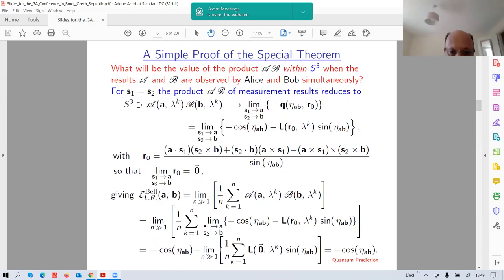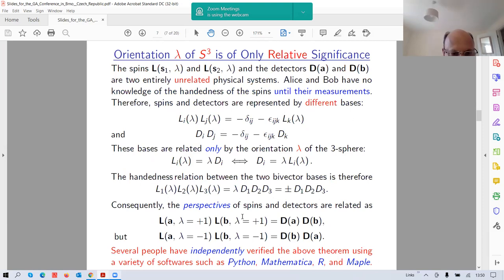These spin bivectors are related to detector bivectors only by the orientation of this three sphere, which I've termed lambda, which has value plus or minus one. Once you assume this, and I'm coming to the criticism by Professor Lasenby, then the calculations of correlations quantum mechanical prediction is quite straightforward. This is a matter of calculation, and this has been verified. What I have calculated has been verified independently by several people, and actually one of the persons who has verified this is sitting in the conference and he is one of the organizers.